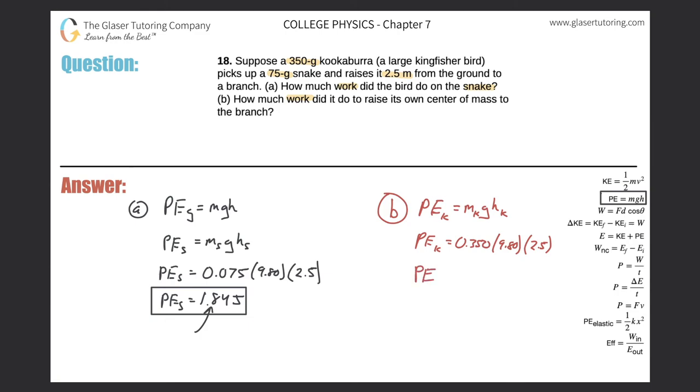So the energy necessary to change its potential energy, kookaburra, was 0.35 times 9.8 times 2.5, kookaburra. So we get 8.58, 8.58 joules.